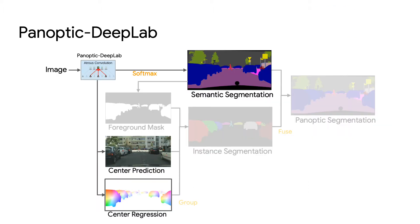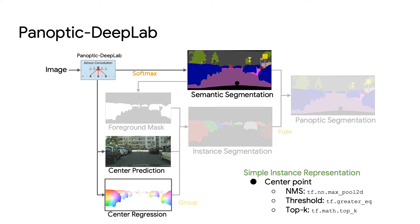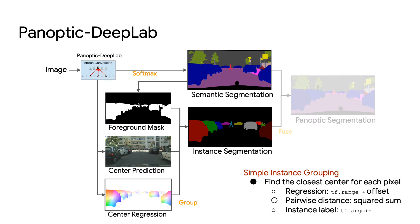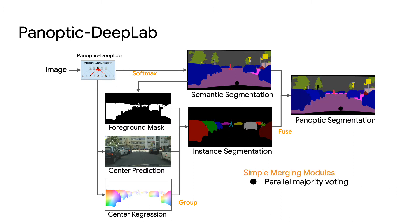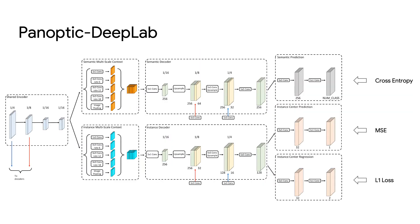Panoptic DeepLab generates three outputs: semantic labels, center heatmap, and center offset regression. Instances are represented by center points. Foreground pixels are grouped by their center offsets. The final Panoptic segmentation output is obtained by a majority voting. Panoptic DeepLab is built upon DeepLab V3+ with an additional instance decoder.